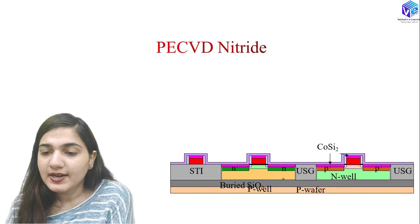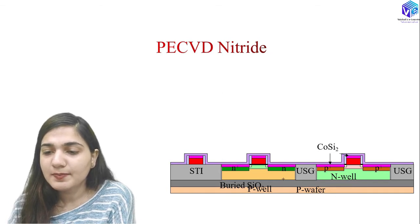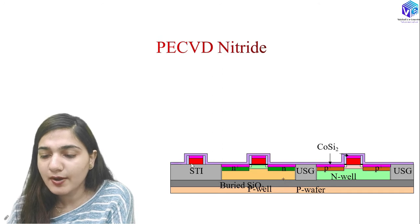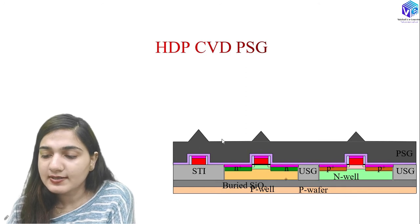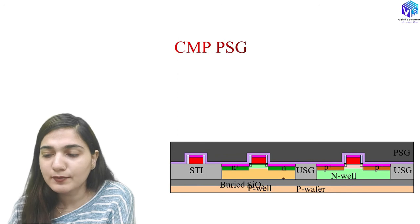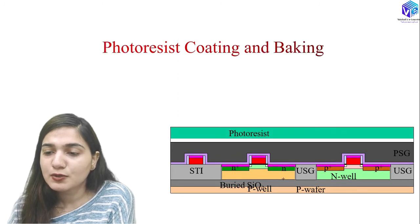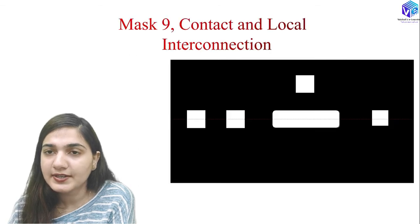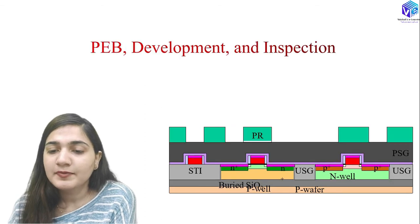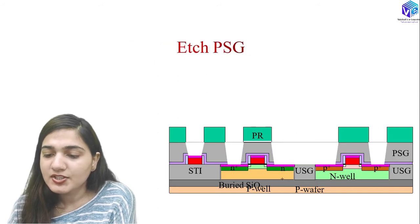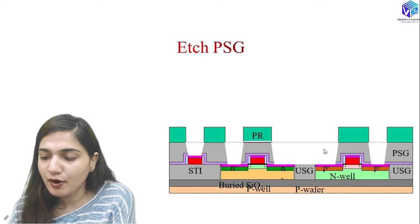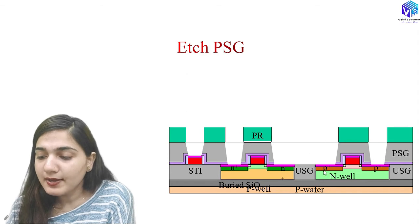PE-CVD (plasma-enhanced CVD) of nitride is deposited above the structure, followed by HDP-CVD of phosphosilicate glass (PSG). CMP is used to planarize the surface. After photoresist coating and baking, mask 9 is used for contact and local interconnection formation. After alignment, exposure, PEB development, and inspection, the PSG is etched to form trenches at the desired locations on the N-well and both N-type and P-type source/drain regions.